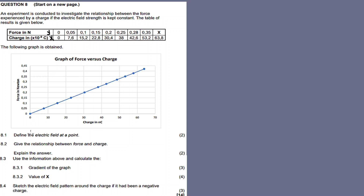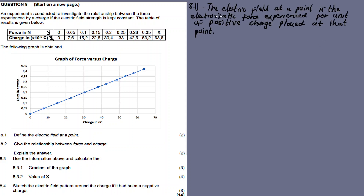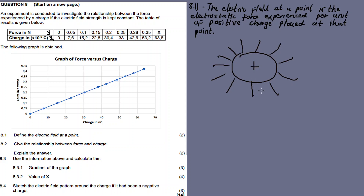8.1: Define the electric field at a point. The electric field at a point is the electrostatic force experienced per unit of positive charge placed at that point. Around a charge, we get an electric field. The electric field strength at point one is stronger, and at point two it is weaker. The closer you are to the charge, the greater the strength.